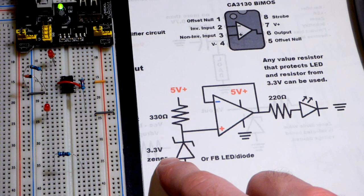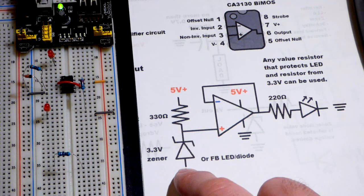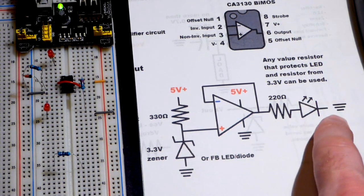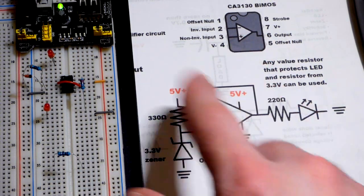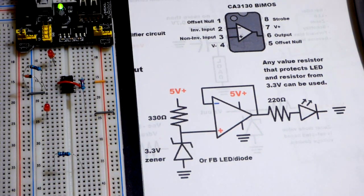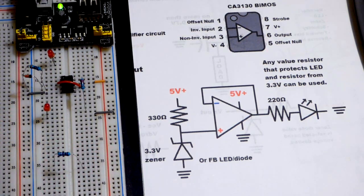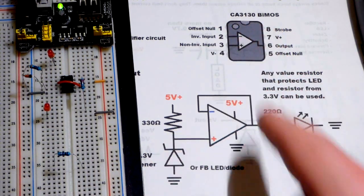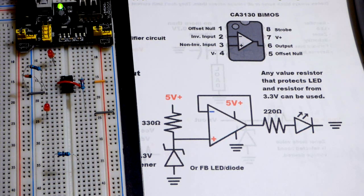These low value Zener diodes tend to fluctuate with their voltage based on how much current is flowing through them. So we would like to have a certain amount of current flow through them regardless of what the load is doing. So we can use an op-amp. This is a single supply, 5 volts at the red rail, 0 volts ground at the blue rail. We can use the CA3130 BIMOS, an op-amp that can work with a single power supply.